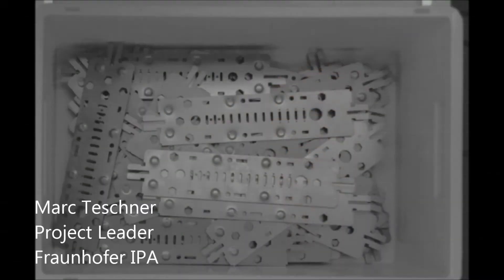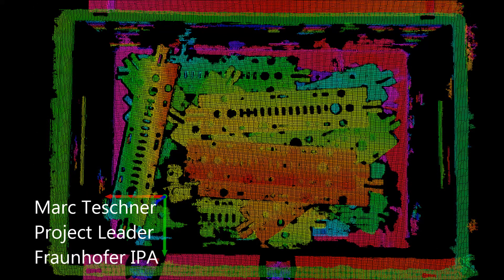Sheet metal parts are very challenging for automated picking because of their reflective surfaces and their thin structures which tend to interlock with each other.